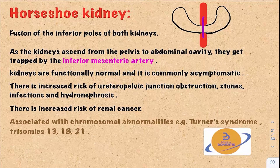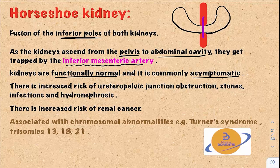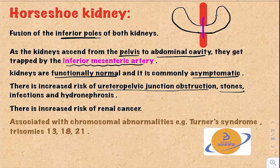The last abnormality is horseshoe kidney. This occurs because of the fusion of the inferior poles of both kidneys. As the kidneys ascend from the pelvis into the abdominal cavity, they get trapped under the inferior mesenteric artery. The kidneys are still functionally normal and most commonly it is asymptomatic. However, there is an increased risk of uretero-pelvic junction obstruction, stones, infections, and hydronephrosis.